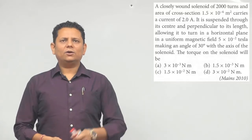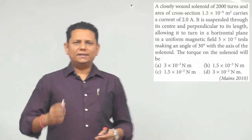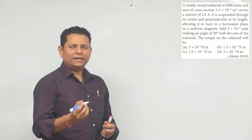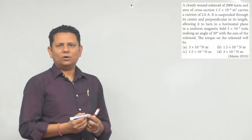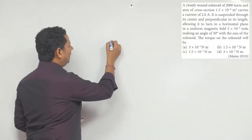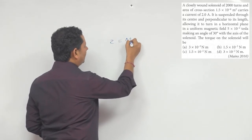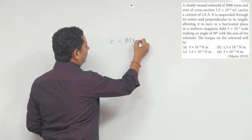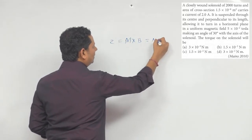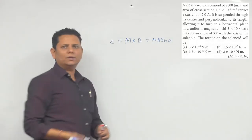The question asks: what will be the torque on this solenoid? It is a very simple question. Whenever we talk about a solenoid, the torque can be written as m cross B. So torque = m × B, which can also be written as mb sin θ.